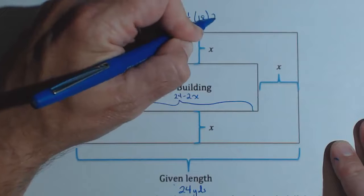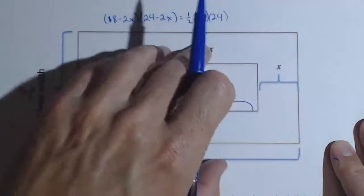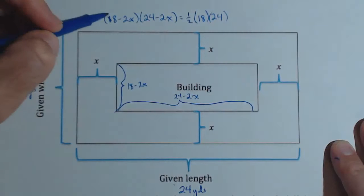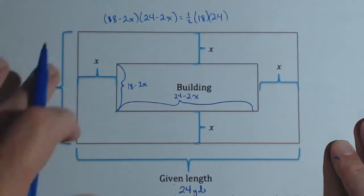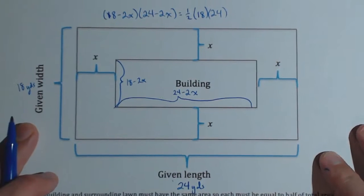This is the total area. We're taking half of it because half of it's split in the lawn and half of it's used for the building. So what we'll do now is we'll multiply this all out, and we will get a quadratic. For time's sake, I'm just going to write out the multiplied out version.